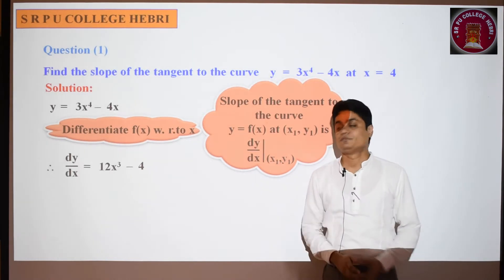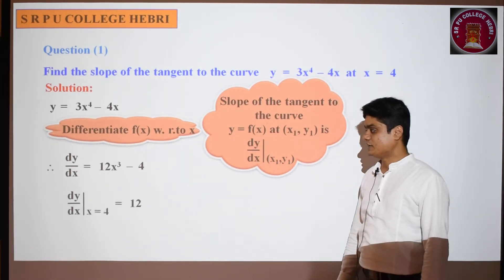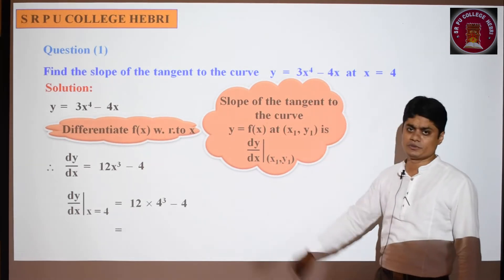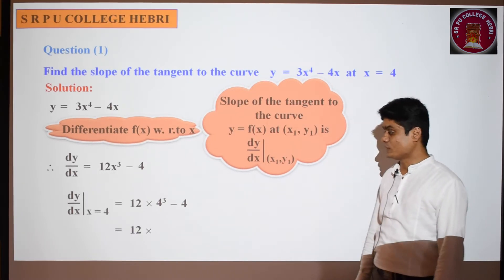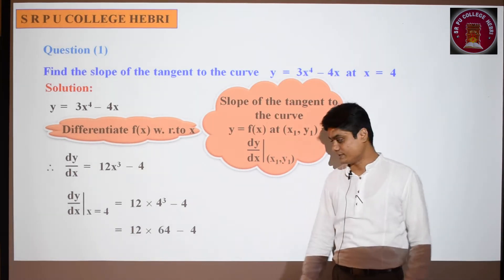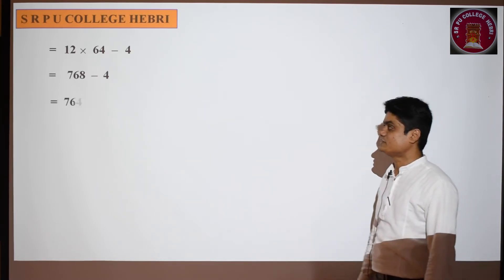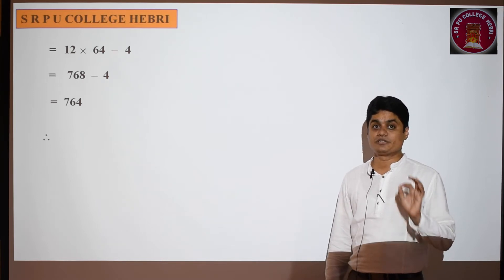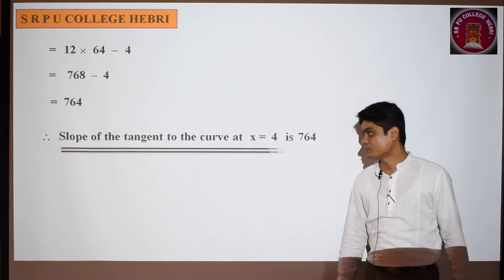Replace x by 4. You can use a calculator to solve this problem. 12 × 4³ - 4. 4³ = 64. So 12 × 64 - 4 = 768 - 4 = 764. So the slope of the tangent to the given curve at the given point is 764.